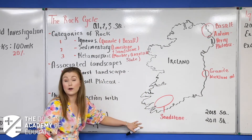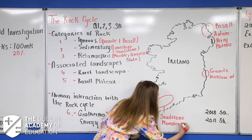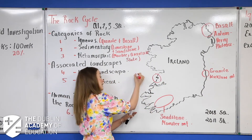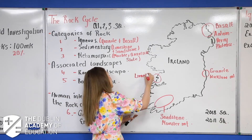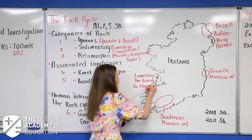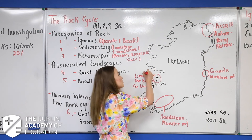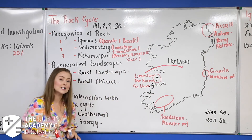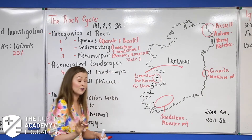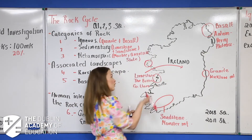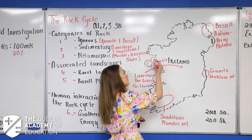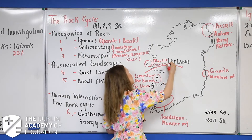Coming around down in Munster, this area has sandstone — circle it — and we can refer to this as the Cork and Kerry Mountains or the Munster Mountains. A little further around, we have the Burren in County Clare, which obviously has limestone. Limestone can also be found in the central plains of Ireland — in 2018 and 2011 they were pointing to the centre of Ireland, so be very careful. Up in Connemara in County Galway you have marble — green marble to be precise — and that is in Connemara.